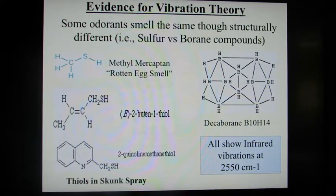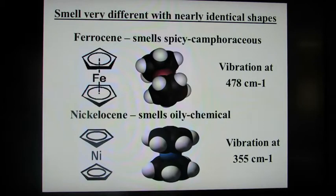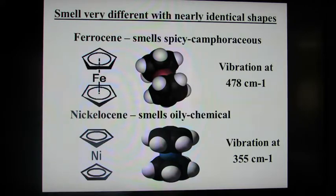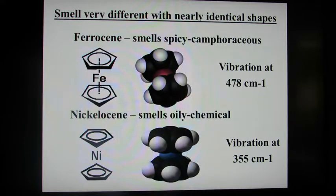Smells can be very different with nearly identical shapes. This was shown with ferrocene and nickelocene — they have very similar shapes with just a different metal in the center. Ferrocene smells spicy and camphorous, whereas nickelocene smells oily. But they have different vibrations: ferrocene at 478 wavenumbers and nickelocene at 375.